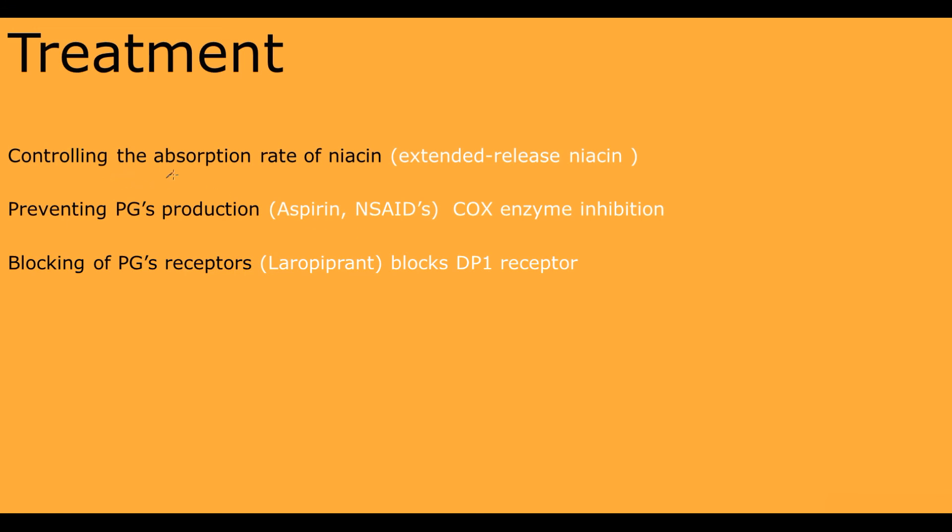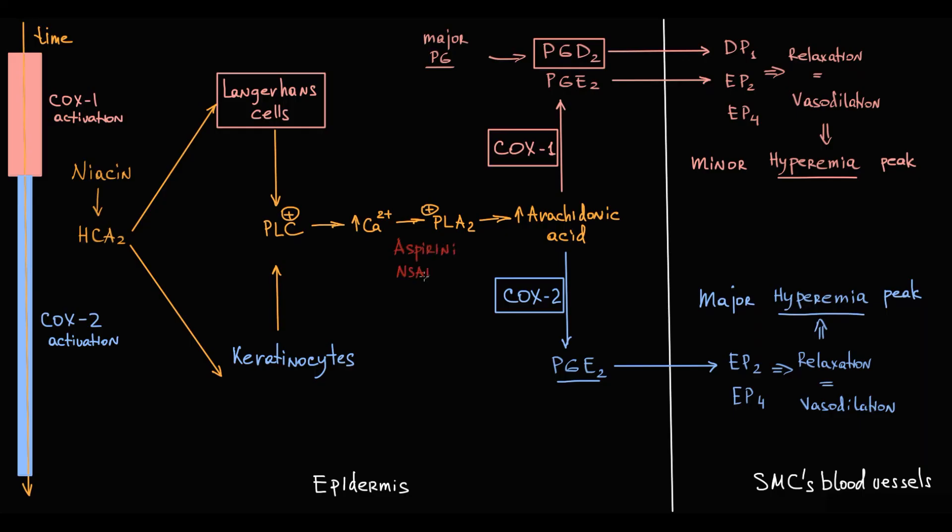We can eliminate and prevent flushing by three major ways: by controlling the absorption rate of niacin, for which extended-release niacin was developed that prolongs absorption time and provides more moderate niacin absorption; by preventing the production of prostaglandins using aspirin and other non-steroidal anti-inflammatory drugs that inhibit both isoforms of COX enzyme and thereby prevent vasodilation and eliminate flushing.